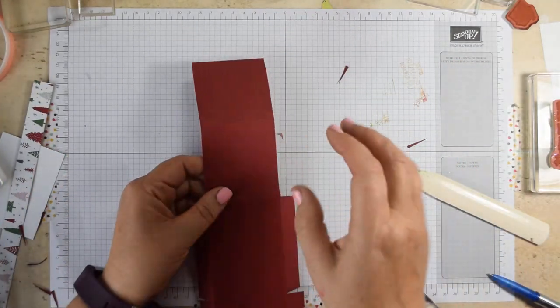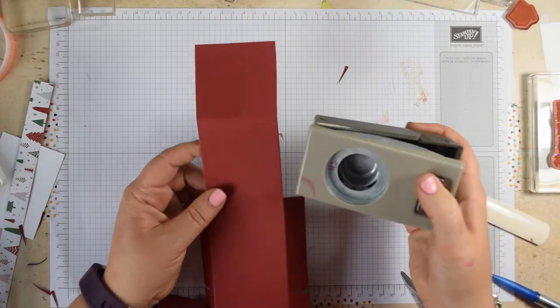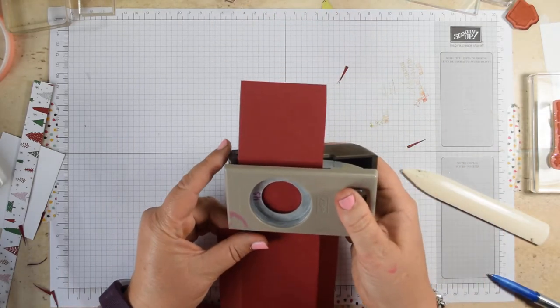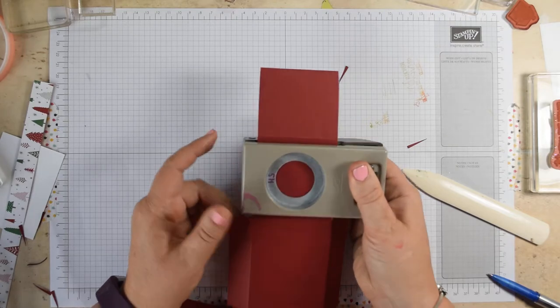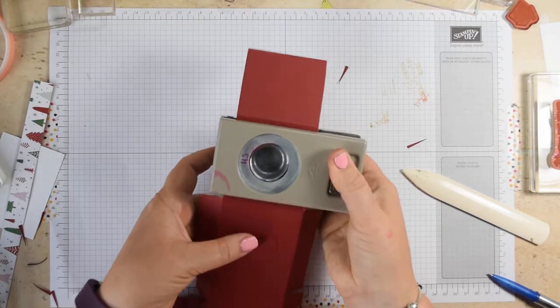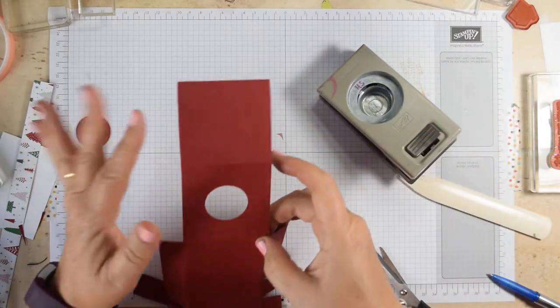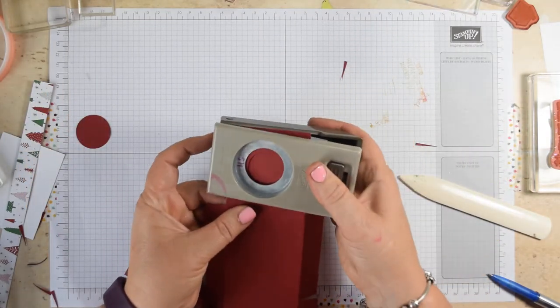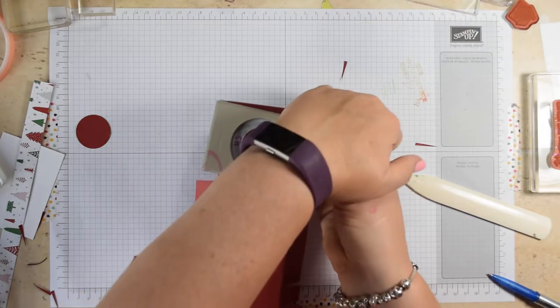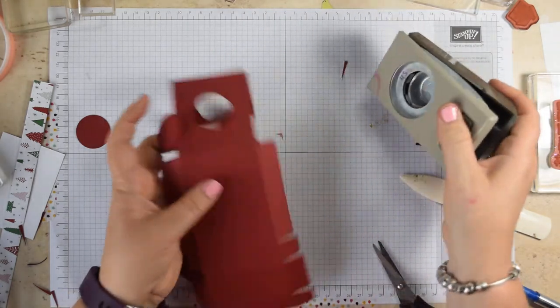Next thing we want to do is we're going to use a one and a quarter inch punch. And I'm just doing this by eye, but you could put a post-it note to make it absolute dead central. And just punch through on that section. Fold the top section in.